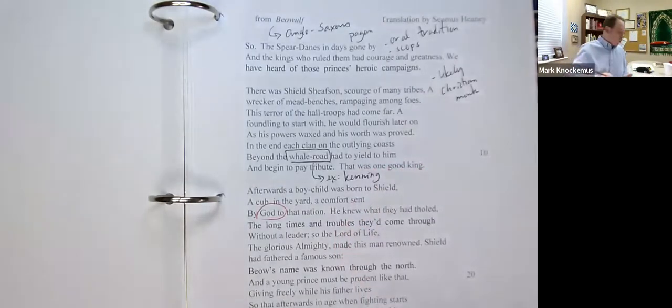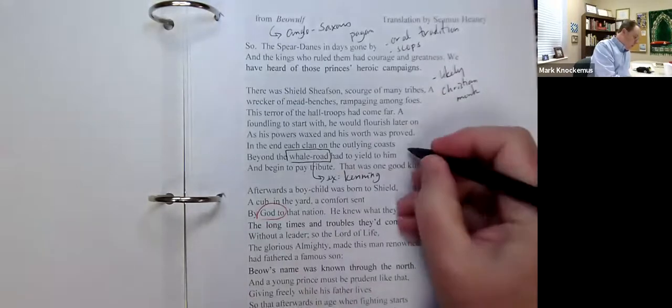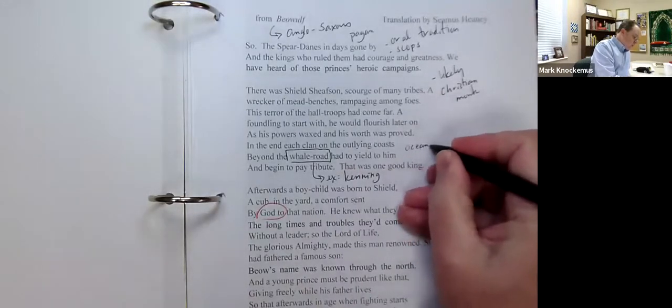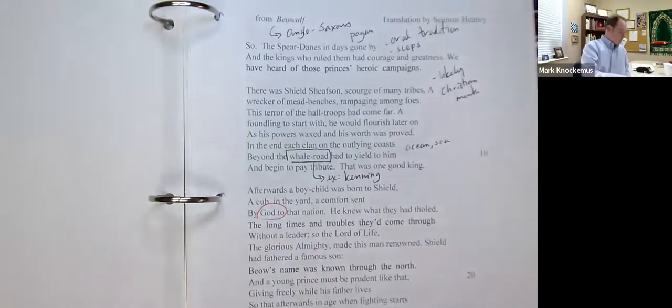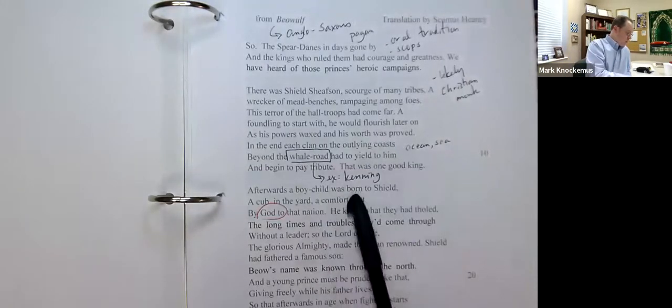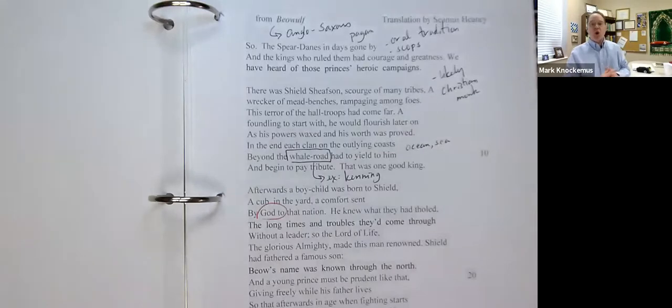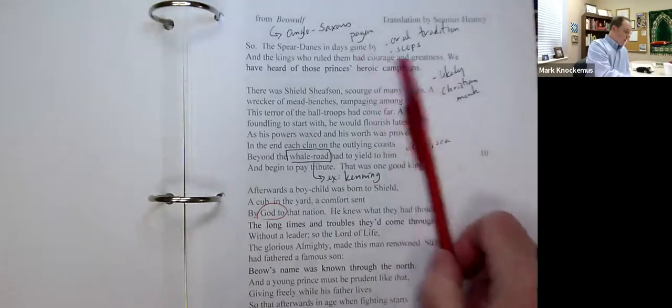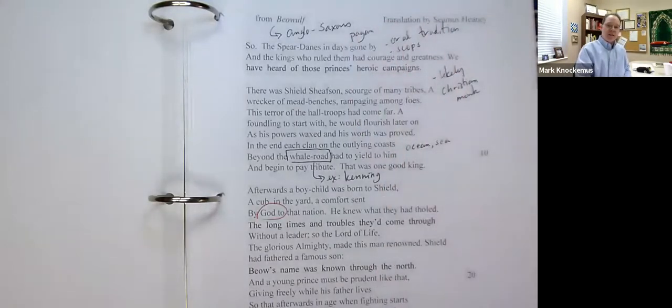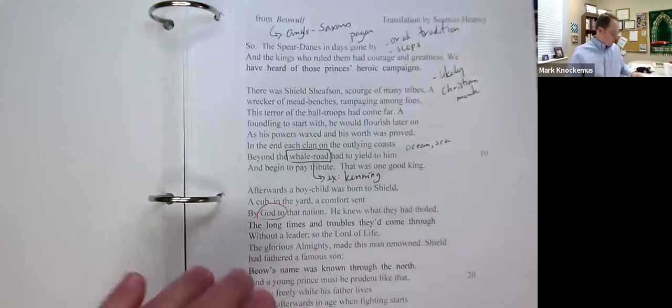What would a whale road be? Well, it would be in the ocean or the sea. Remember that these kennings, these are early examples of figurative language that were common within the Anglo-Saxon hero tales and that we still have with us in the text today.